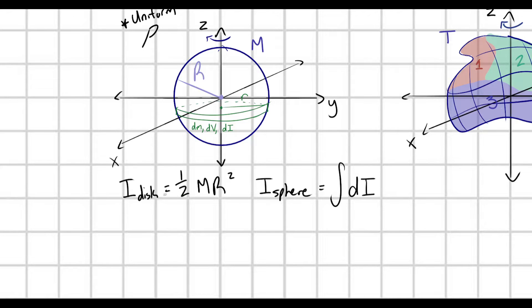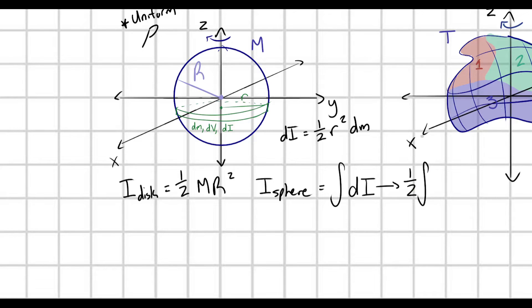We know that each of these disks, since a disk generally has a moment of inertia of ½mR², this translates to: dI is going to be equal to ½ times little r squared dm. So our integral becomes one-half times the integral of r² dm.